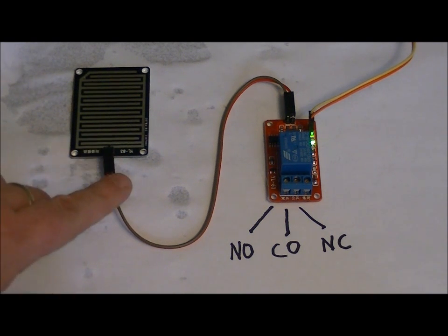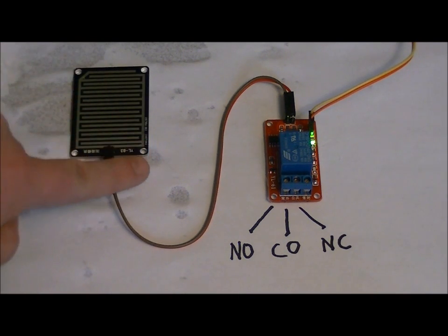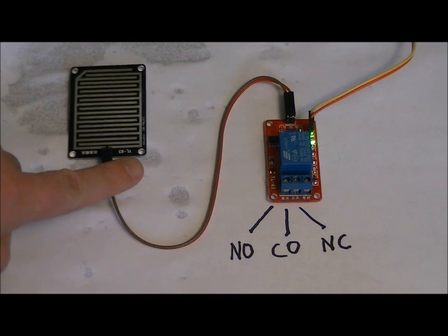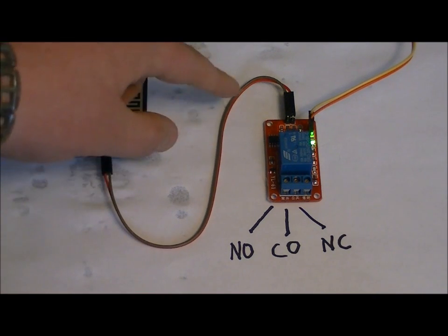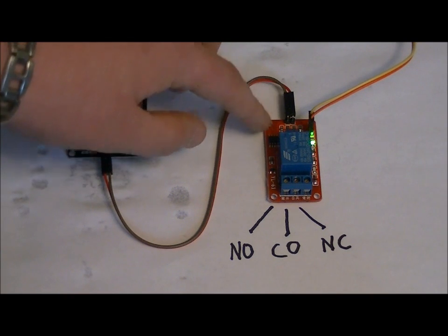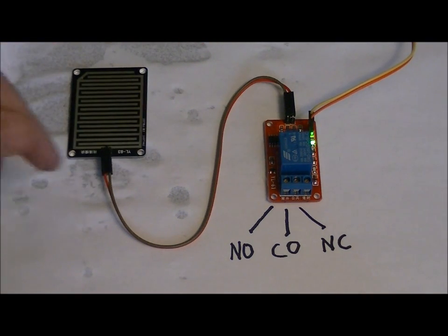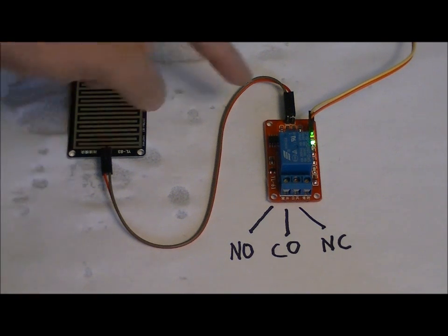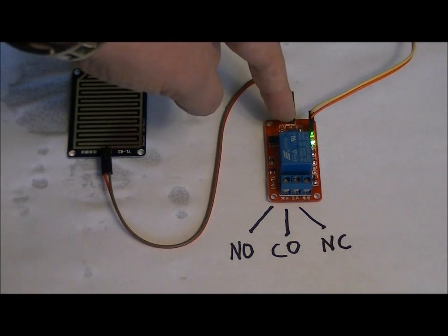The ring detector right here is essentially just two pads, segregated, and when water shorts those two pads, the microcontroller on the board detects it, and the relay turns on as long as there's a short on there. There's adjustable sensitivity via a potentiometer back here.